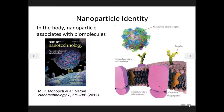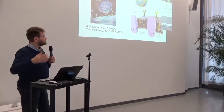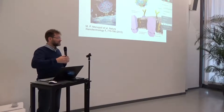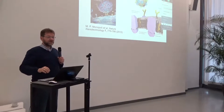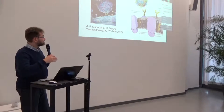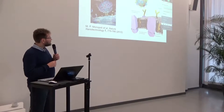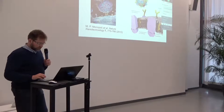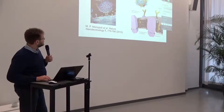Therefore, we come to a new idea: we have to speak about the negative effects in terms of nanoparticle identity. That identity is determined by the whole history of interaction, starting from nanoparticle production, processing, distribution in the environment, then initial contacts, and then systemic distribution. So it is a long chain of events that leads to some particular, probably adverse, outcome.